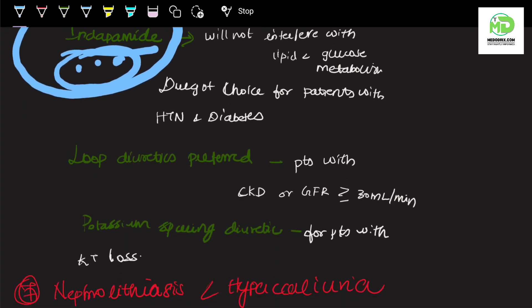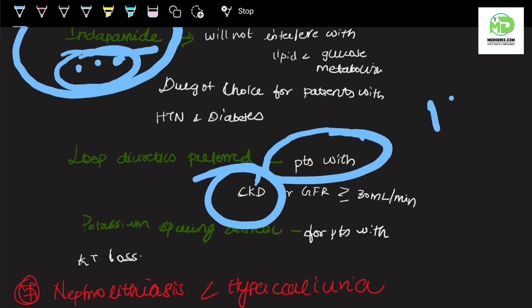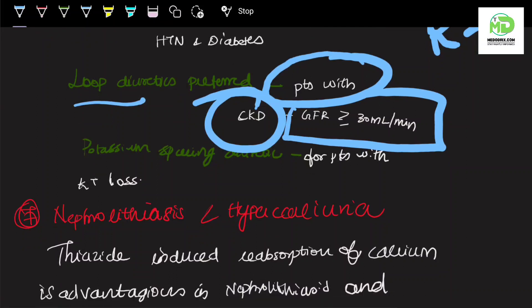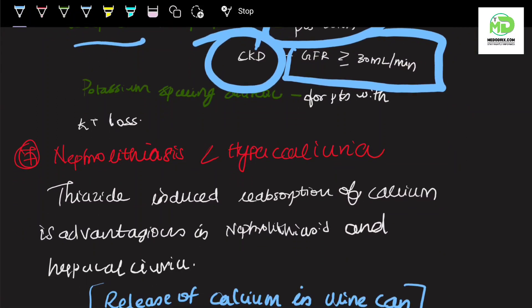Loop diuretics are also preferred when the patient has CKD. I already told you that whenever a patient has kidney injury, we always go for loop diuretics. When the patient has glomerular filtration rate less than or equal to 30 ml per minute, we go for loop diuretics. Potassium-sparing diuretics are used when a patient has potassium loss. Loop and thiazide diuretics may cause hypokalemia, so when there's more potassium loss, we use potassium-sparing diuretics which will not cause hypokalemia.